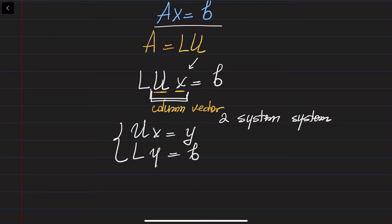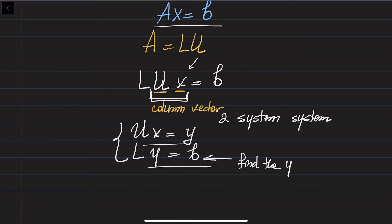So instead of solving one system Ax = B, we are going to solve two systems. It is still easier and efficient because solving these two systems requires only one forward substitution and one backward substitution. We solve the second system first to find y, then substitute into the first equation to find x. Let me show you an example.